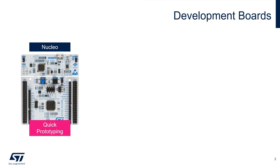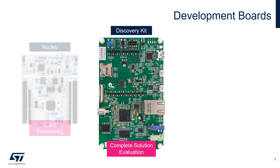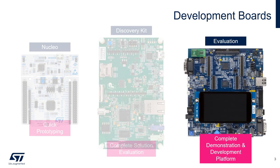For each STM32 product line, we offer three tiers of hardware development boards. The STM32 Nucleo boards are highly affordable, allow you to try out new ideas, and are the most ideal for creating prototypes. The STM32 discovery kits are a cost-effective and complete solution for evaluating the extensive capabilities of our STM32 families. And lastly, the STM32 evaluation boards have been designed to be a complete demonstration and development platform for our STM32 families.